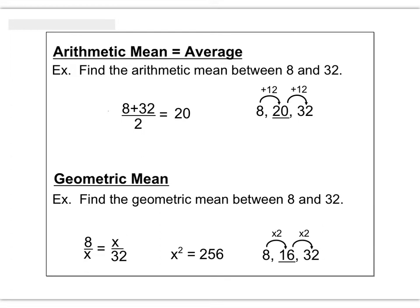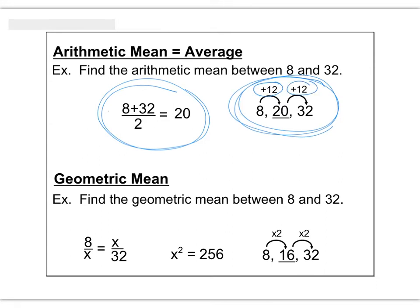You're kind of used to finding what's called an arithmetic mean. If you want to find the mean it's like finding the average - you add up all the items and divide by however many you have. For example, if I want to find the arithmetic mean between 8 and 32, I add them together, divide by 2, and I get 20. When you do an arithmetic mean, the difference between the terms is always the same. Between 8 and 20 is 12, and between 20 and 32 is 12. You're always adding the same amount.